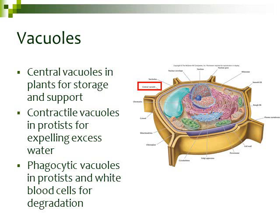Another type of structure found in cells is called vacuoles. The central vacuole is only found in plants and is used for water storage, or it can store certain pigments for coloring, and it also helps to support the cell. Other types of vacuoles found in animals include contractile vacuoles, which are used to expel excess water from the cell. A third type — phagocytic vacuoles in protists and white blood cells — help to break down bacteria or items that shouldn't be around the cell.